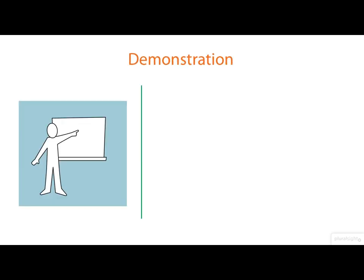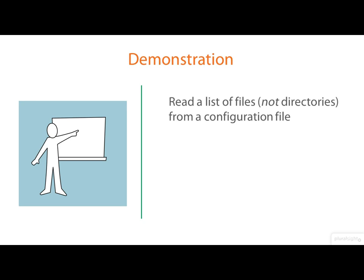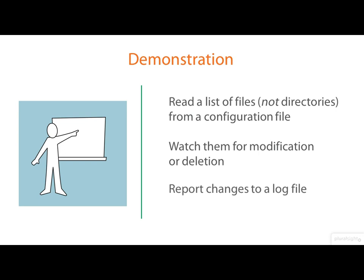On to the demonstration. This program is a little longer than some we've looked at so far. We're going to read a list of the files we want to watch from a configuration file. We've explicitly chosen not to monitor directories, and the program explicitly excludes them. We're going to watch those files either for modification or for deletion. If such an event occurs, we're going to write it to a log file.